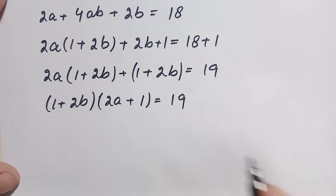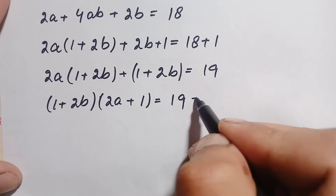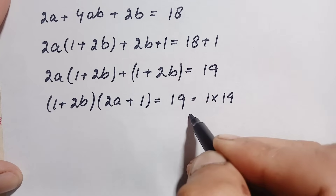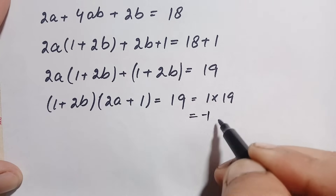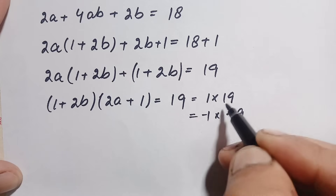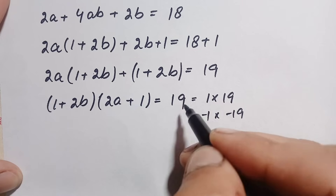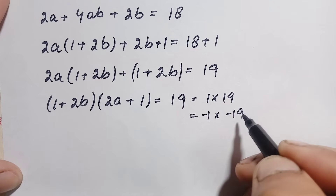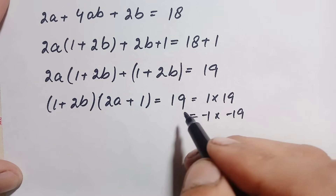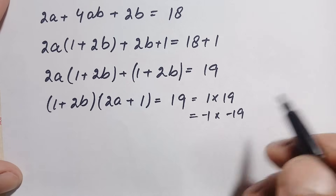And we will factorize 19 on the right hand side. So we can write 19 as the product of 1 × 19, and also as (−1) × (−19). Both (19 × 1) and (−19 × −1) give the same solutions, so we take only these two factorizations.